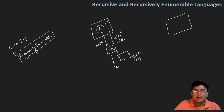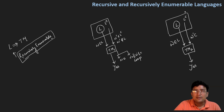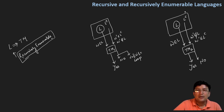इसी तरह से मान लीजिए हमारे पास एक language L है, और Venn diagram के तो कह सकते हैं कि this is the language complement। फिर हमने एक Turing machine बनाई है, let's say the name of the Turing machine is TM2। मान लीजिए कि एक string है w which belongs to the language L — अगर हमने यह input TM2 को provide किया, तो Turing machine yes provide करती है, कहती है कि यह string इस language का part है। लेकिन अगर हमने कोई string ऐसी दी जो कि इस language का part नहीं है, या फिर w' is the element of language complement — तो TM2 कहती है no, इसको reject कर देती है। तो ऐसी language जिसके लिए TM2 type की machine बन सकती है जो कि infinite loop में नहीं जाएगी, बल्कि हमेशा yes या no में answer देगी — ऐसी language को हम कहेंगे recursive language.